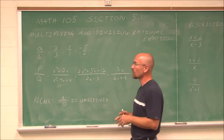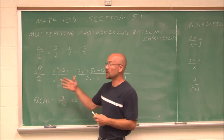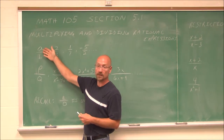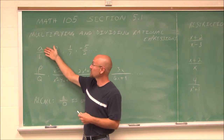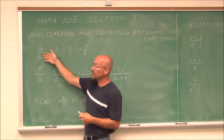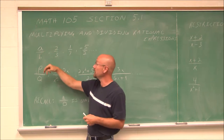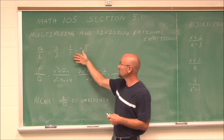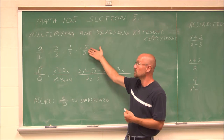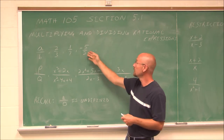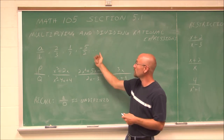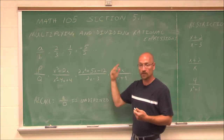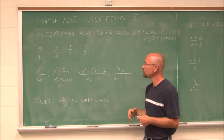If we recall, a rational number is any number that can be written as a fraction, where a and b are simply integers, such as 2 thirds, 1 seventh, maybe negative 5 halves. An improper fraction is still a rational expression.